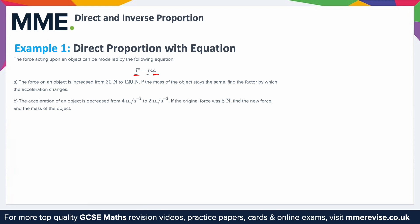So let's figure out what factor the force has gone up by. Well, 120 divided by 20 is 6, so the force has gone up by a factor of 6. And as I've just said, the acceleration will have to go up by the same factor. So the answer for the first part is just 6.